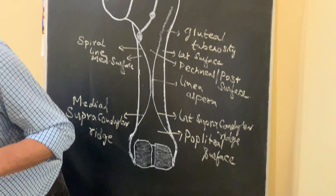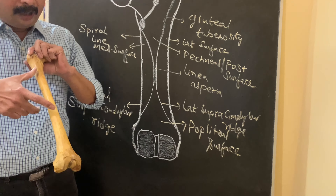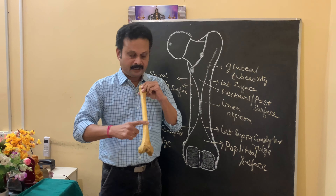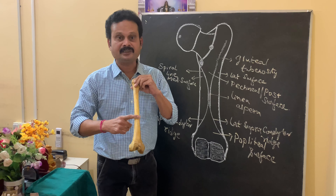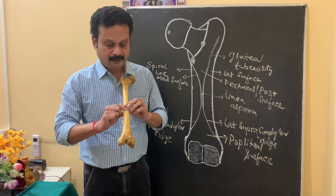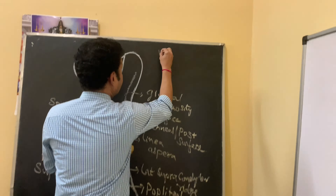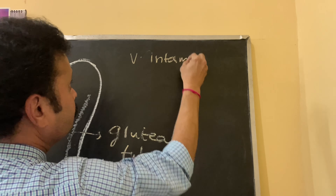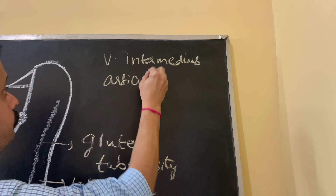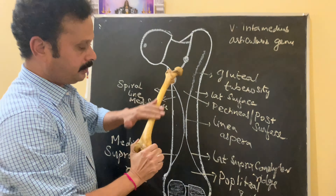Now let us talk about the muscle attachments to the shaft. The upper three-fourths of the entire anterior surface gives attachment to vastus intermedius. The lower one-fourth gives attachment to the muscle called articularis genu. So vastus intermedius and articularis genu are attached to the anterior surface.